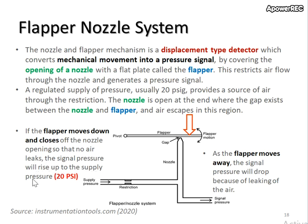The signal pressure will rise up to the supply pressure, which is 20 psi, meaning the signal pressure will be equivalent to the supply pressure. But if the flapper moves away from the nozzle, the signal pressure will drop because of the leaking of the air.